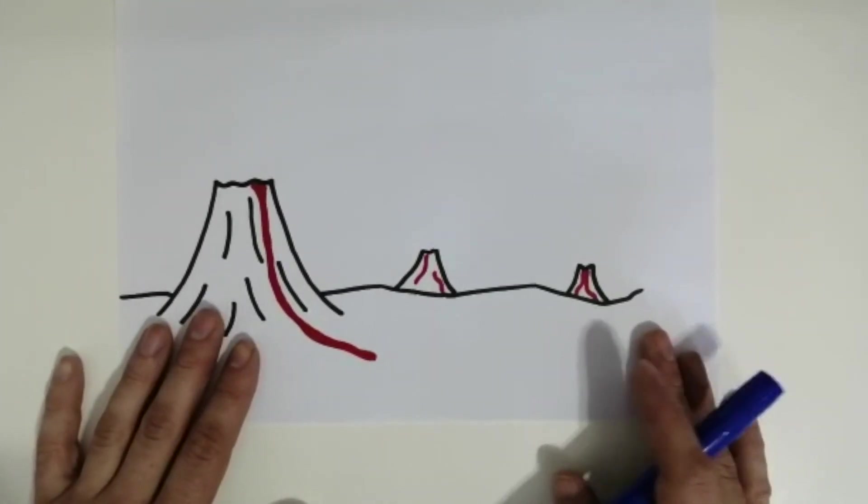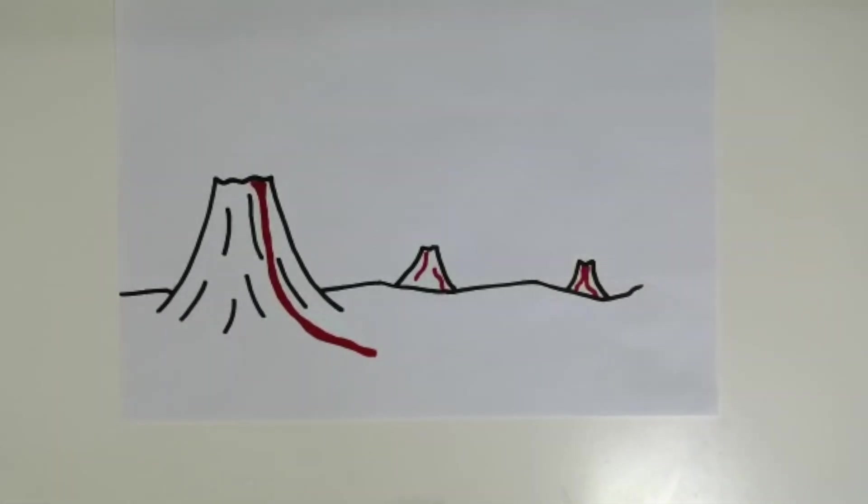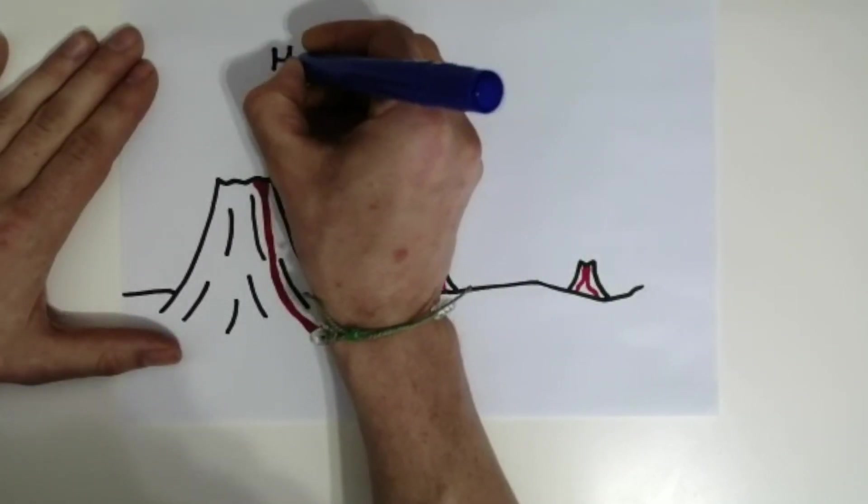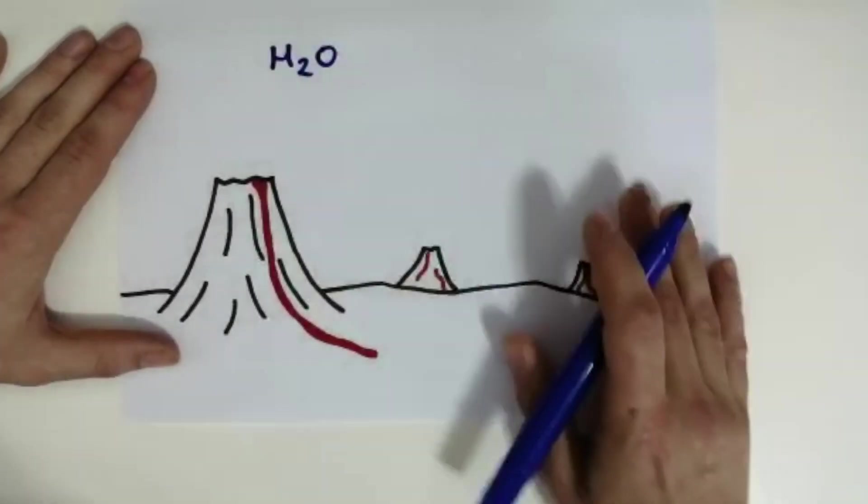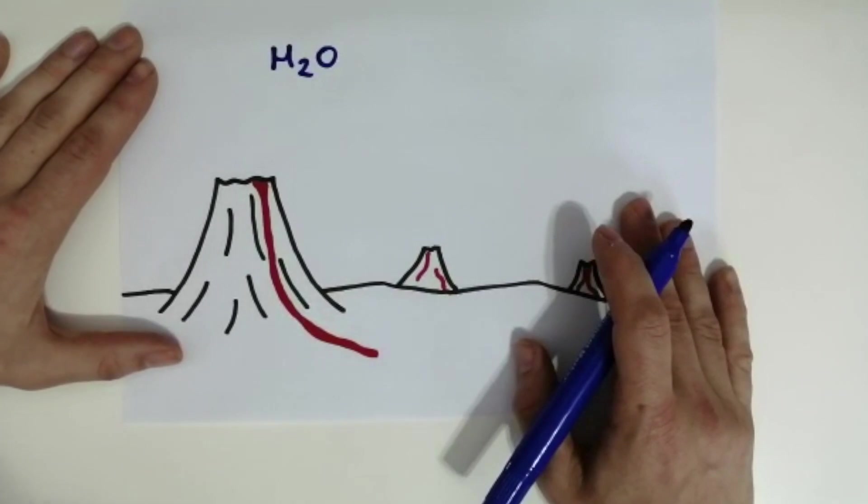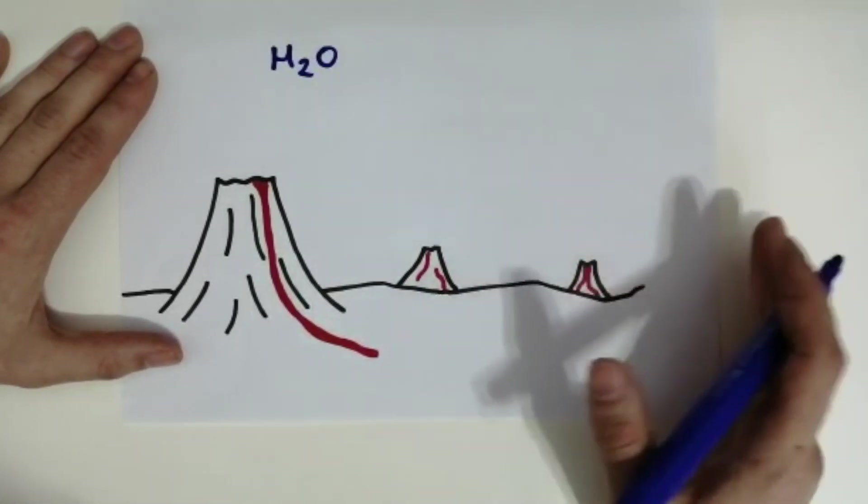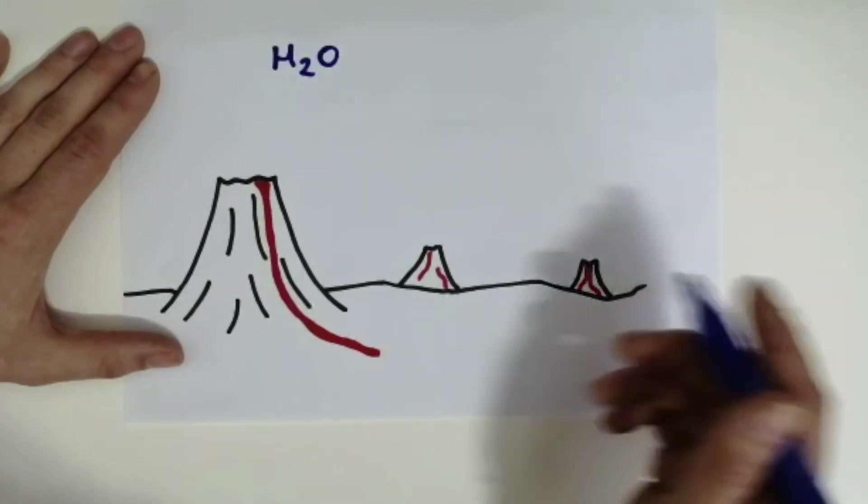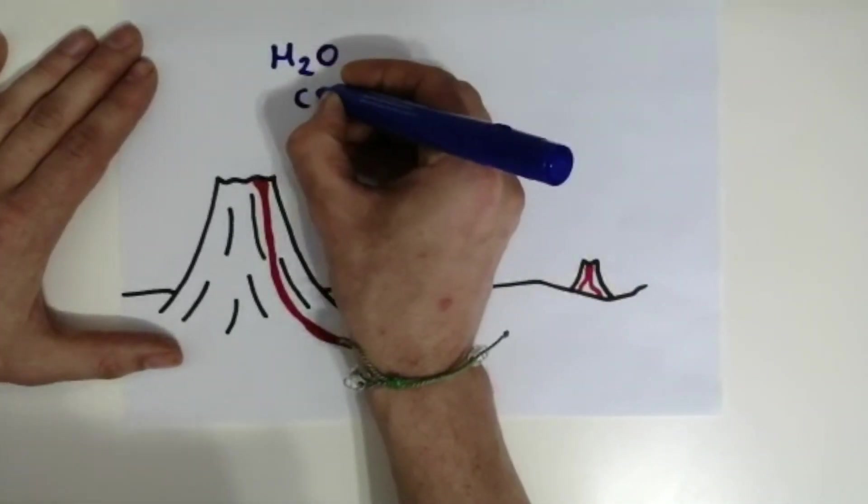The gases in the atmosphere at the time are believed to have all come from volcanoes, and the three gases that we're going to focus on are water vapor H2O. Now it wasn't liquid water because the planet was too hot, so it was water vapor. We had CO2 carbon dioxide.